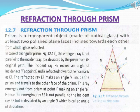Refracted ray EF prism کے اندر angle r بناتی ہوئے prism کی دوسری سطح کی طرف چلی جاتی ہے۔ یہ ray prism سے نقطہ F پر angle e بناتی ہوئے باہر نکل جاتی ہے — لہذا emergent ray FS، incident ray PE کے parallel نہیں ہے۔ Angle D کو angle of deviation کہتے ہیں۔